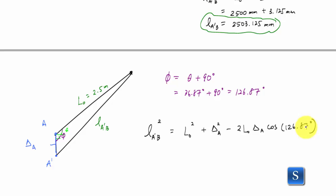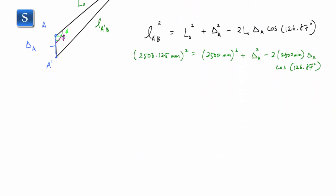And now if I plug and chug some numbers, I would have, and now I have one equation, one unknown, I just need to solve for delta A. And I can do that.